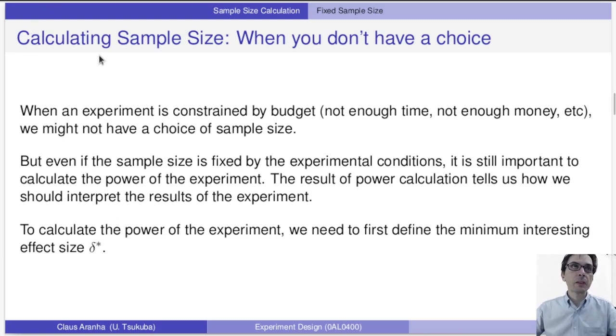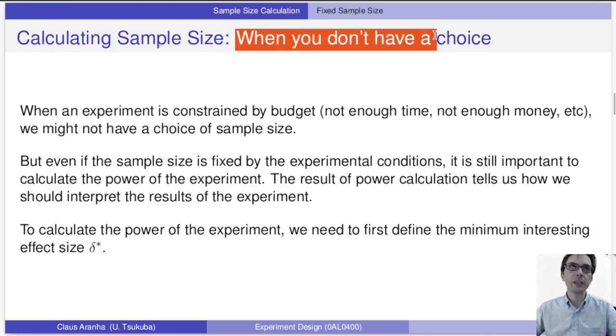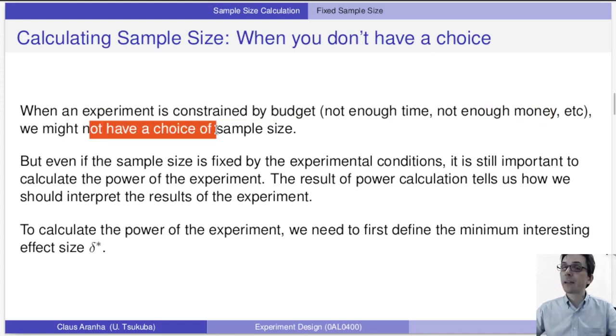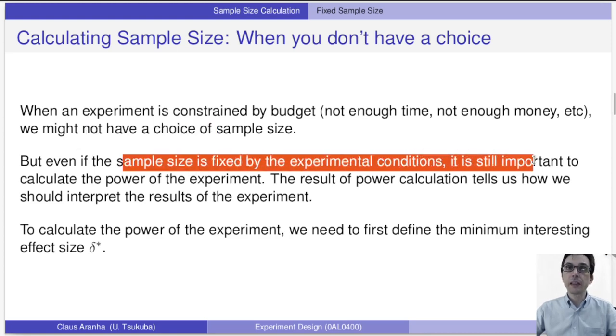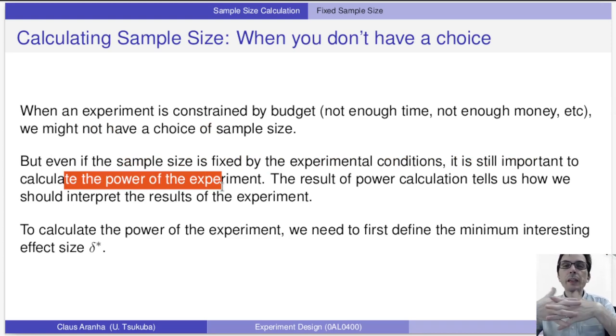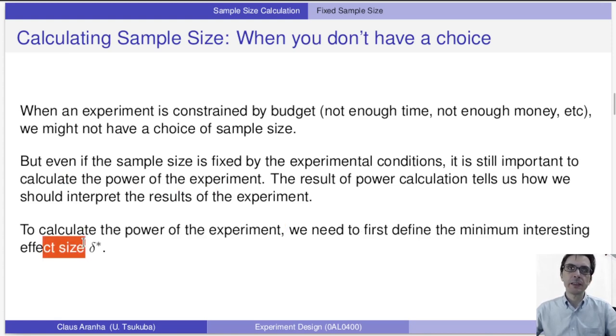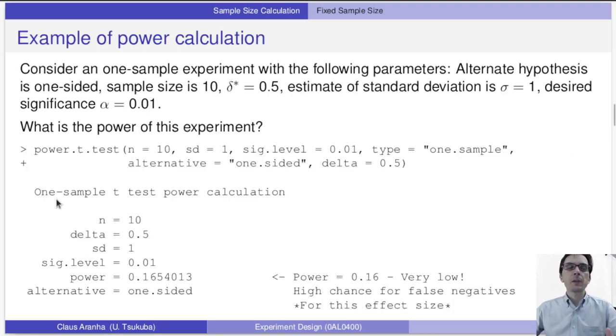Of course, sometimes even if we calculate the sample size, we don't really have a choice. When an experiment is constrained by budget, so we don't have enough time or we don't have enough money, we might not have a choice of sample size. But even if the sample size is fixed by the experiment conditions, it's still important to calculate the power of the experiment. If we calculate the necessary sample size, even if our sample size is fixed, we may know how trustworthy our experiment is, what's the power of the experiment. So the power calculation tells us how we should interpret the results of the experiment. To calculate the power of experiment, we need to first define the minimum interesting effect size δ*. We have talked about this before.